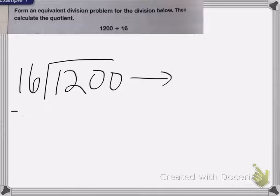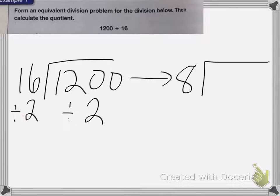To do that, I'm going to divide both the numbers by 2, because since I do it to both of the numbers, it doesn't change my answer. So 16 divided by 2 is 8, and 1,200 divided by 2 is 600.